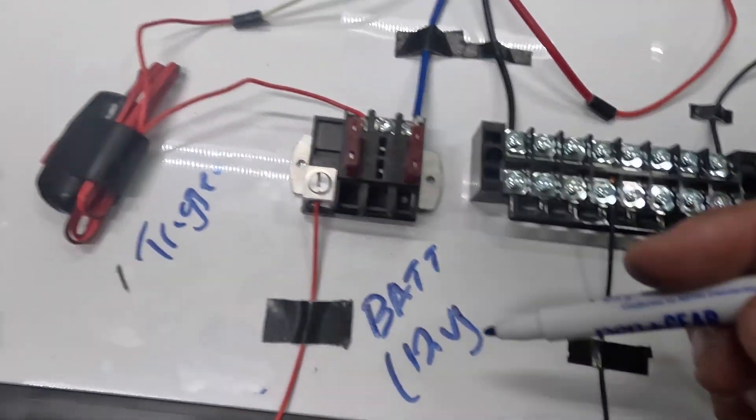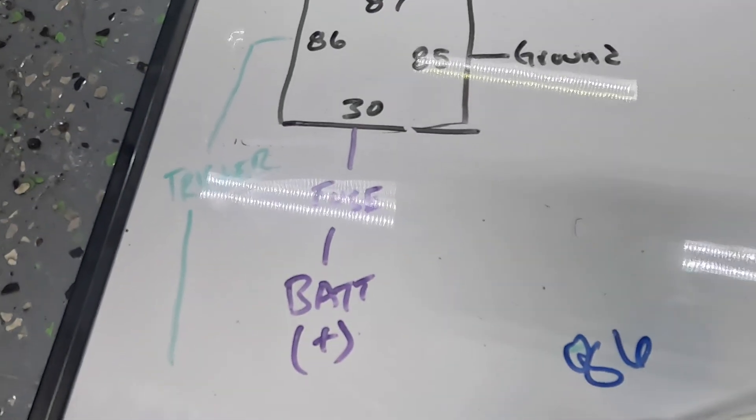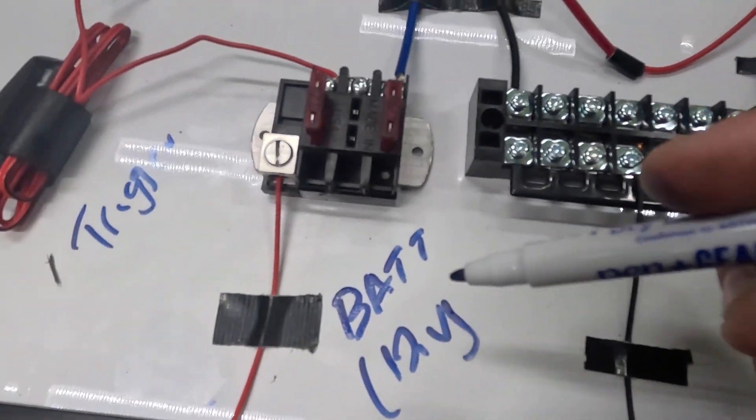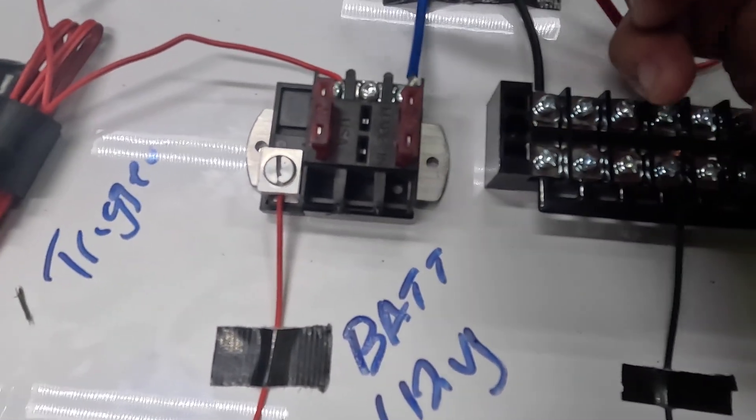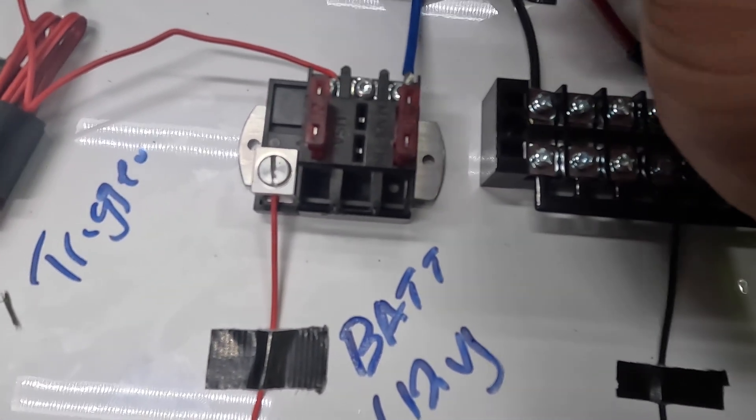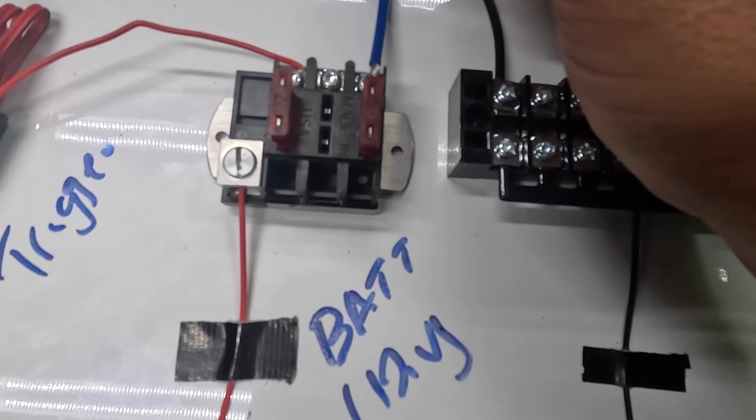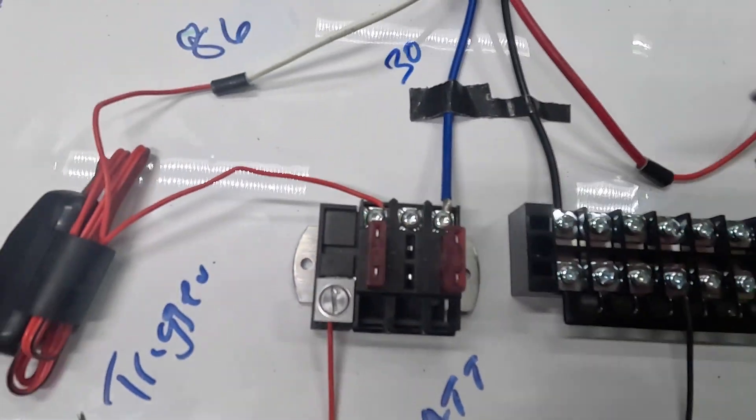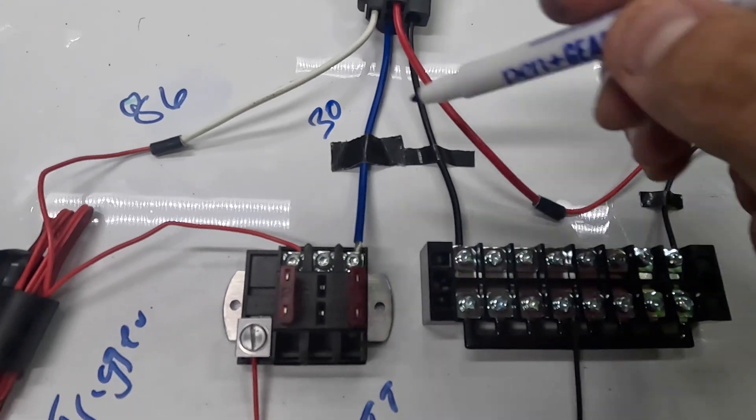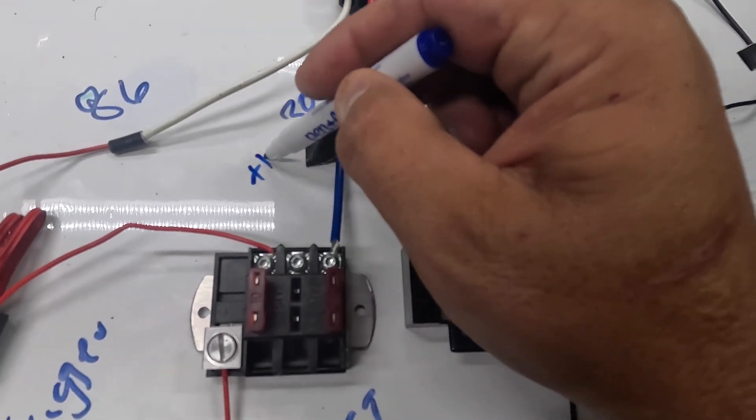And then your output is going to go to 86 on your relay, which is the white wire here. Battery 12 volts, like we said earlier, that goes fused to 30. So we have our battery in, our fuse, and then this is going to be your input of 30 on the relay. So that's going to be your blue wire, which is going to be plus 12 volts.